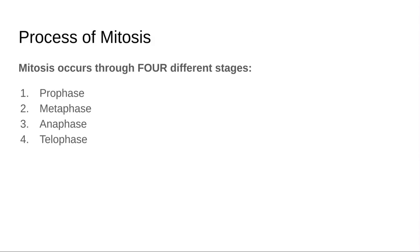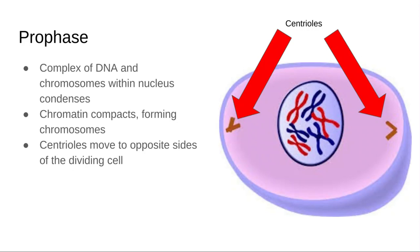So prophase starts with chromosomes inside of the nucleus. These chromosomes, or this chromatin, basically condenses into chromosomes within the nucleus. These things called centrioles on opposite sides of the cell are getting ready to attach something called spindle fibers to the chromosomes.